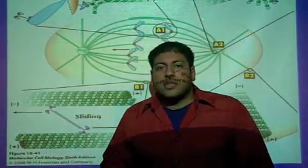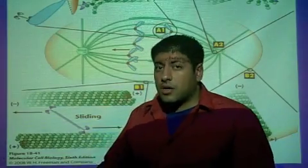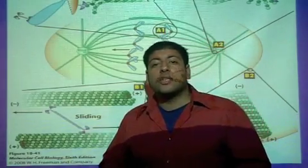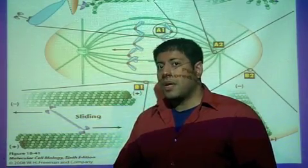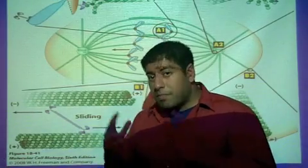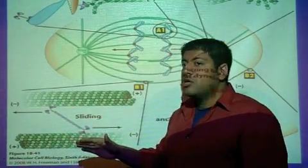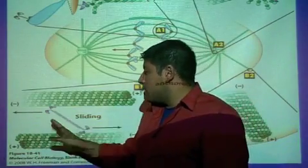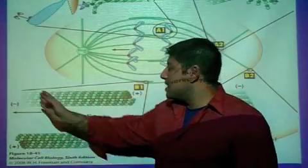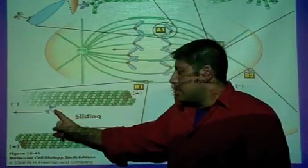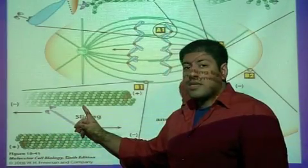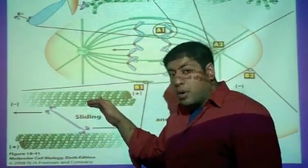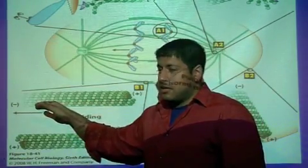When kinesin-5 is energized by ATP and goes through its cross-bridge cycle or walking mechanism along the microtubule, it walks towards the plus-end but also has a power stroke. This power stroke causes the microtubules to move in the opposite direction — towards their minus-end. So, in other words, for this top microtubule, the minus-end is at the centriole side and the plus-end is toward the center. Kinesin-5 walks towards the plus-end, but when it power strokes — releasing inorganic phosphate — it pushes the microtubule towards the minus-end.